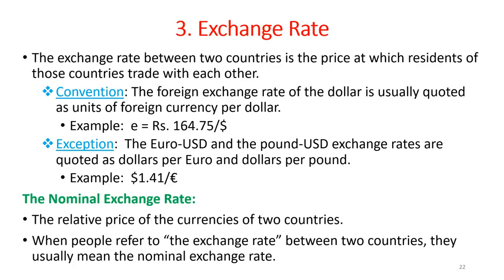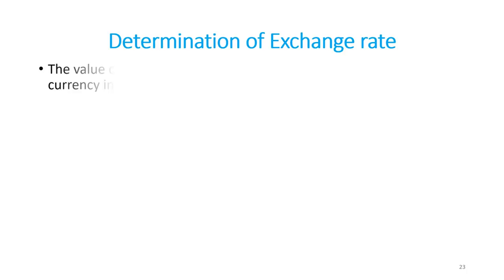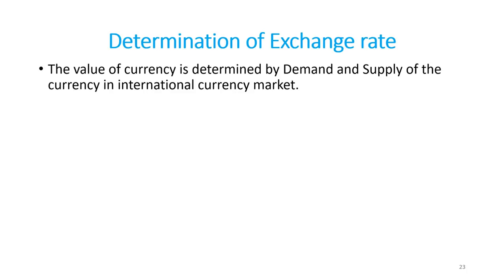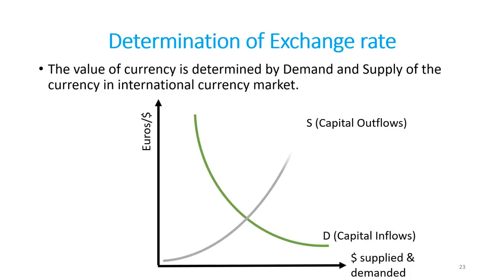The value of a currency is determined by demand and supply of currencies in the international currency market, very much like the determination of the price of goods in a market. The forces of demand and supply play a critical role, and the equality of the two determines the value of the exchange rate.